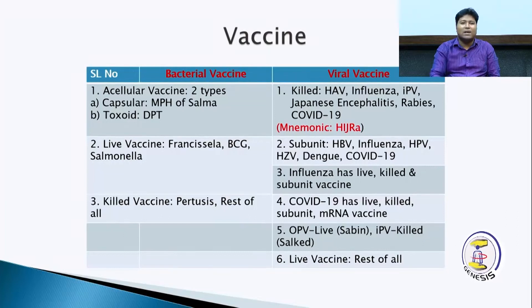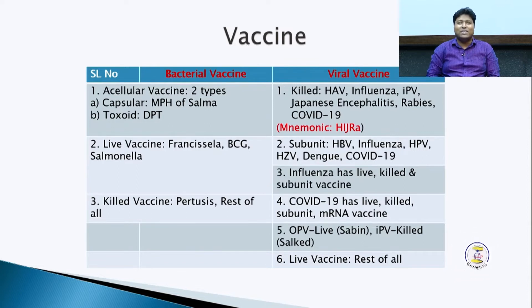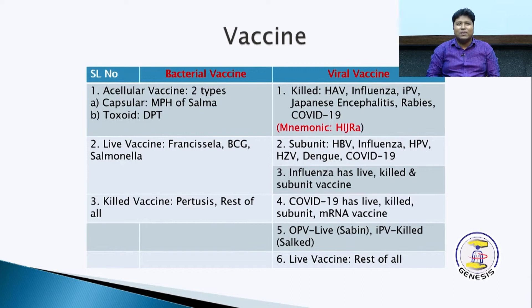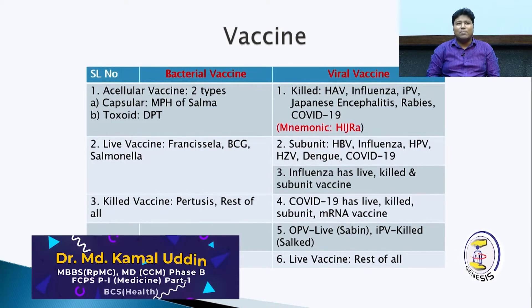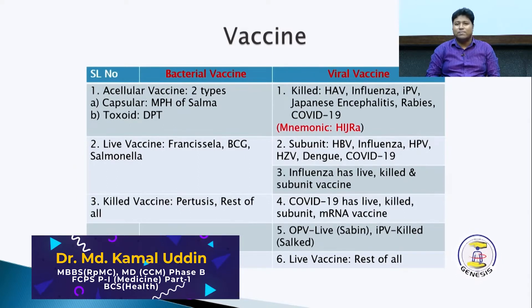The next question is bacterial vaccine. Bacterial vaccine is three types of vaccines: cellular, live vaccine, and killed vaccine.